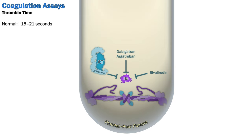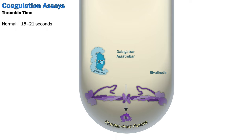Moving further down the common pathway: the thrombin time is another test for inhibitors, this time for factor IIa, though it relies on fibrinogen as a substrate. A relatively dilute quantity of thrombin is added to a sample, and then the time to fibrin formation is determined. Because it's so low in the cascade, it's only really sensitive to deficiency or abnormalities of fibrinogen and thrombin inhibitors, including unfractionated heparin and direct agents like dabigatran, argatroban, and bivalirudin. The ecarin clotting time is similar, but creates an active intermediate called meizothrombin from prothrombin, which is affected by direct thrombin inhibitors but not by heparin.